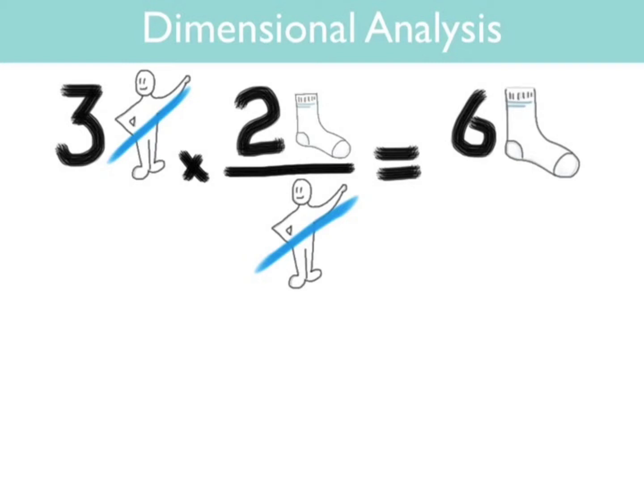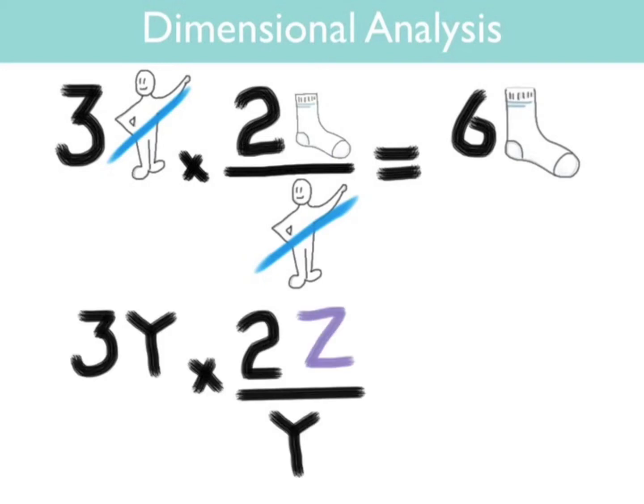If you don't believe me, take a look at this algebraic problem. Take three y times two z over y. The y's will cancel and you get six z. There's no mention of y here on the right side of the equation at all. It has mathematically disappeared.